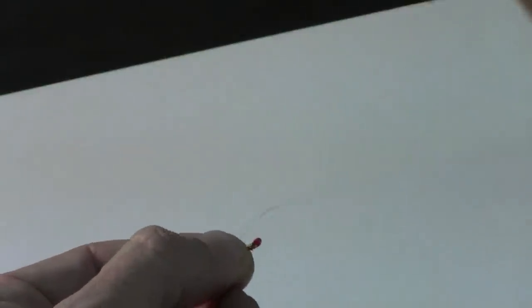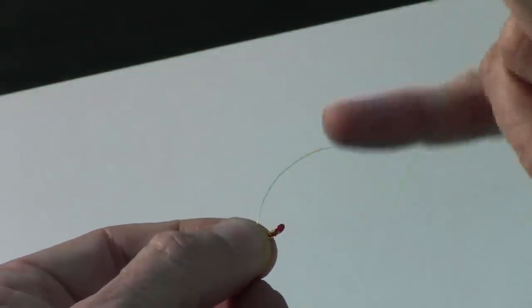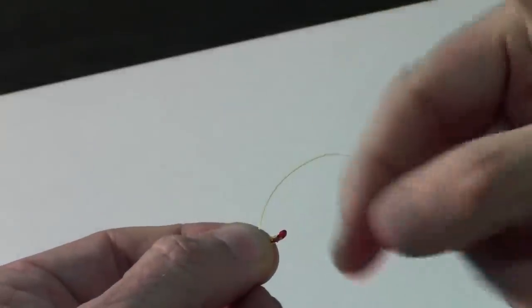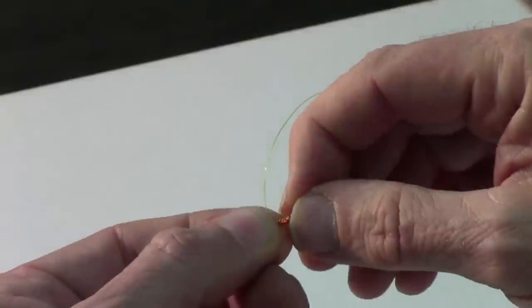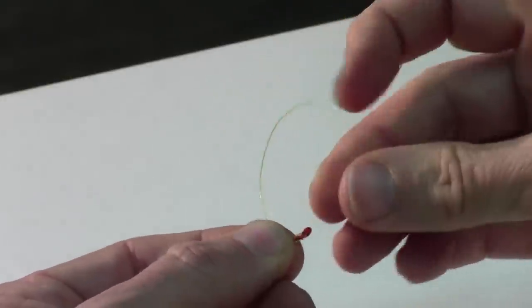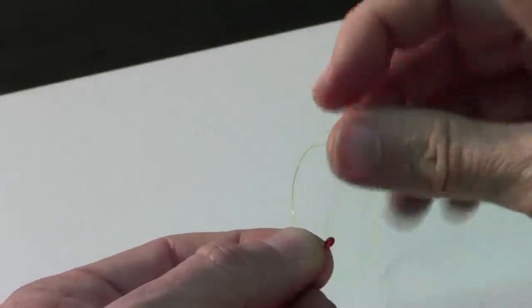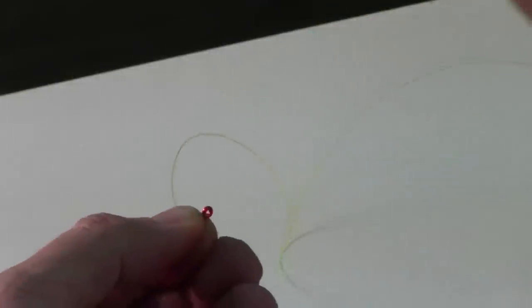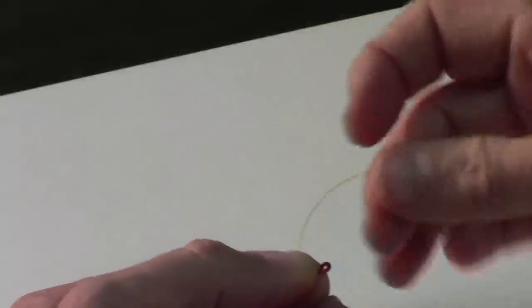When you do the loop you want to always go behind the previous loop so you're not going over it. So everything's nice and lined up and then I kind of pinch them together. Now I'm holding that with my left thumb and finger.